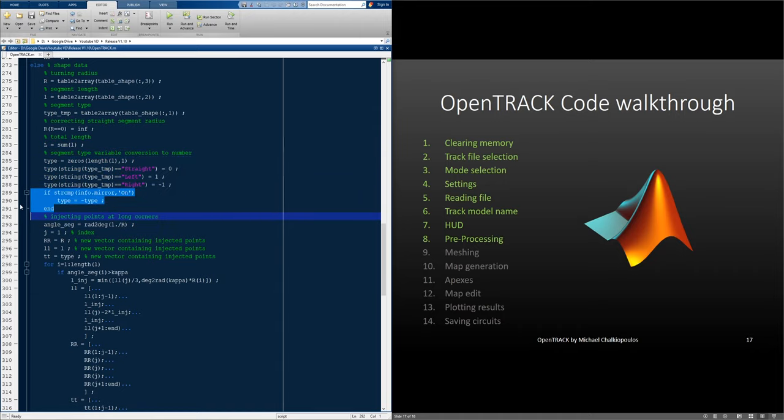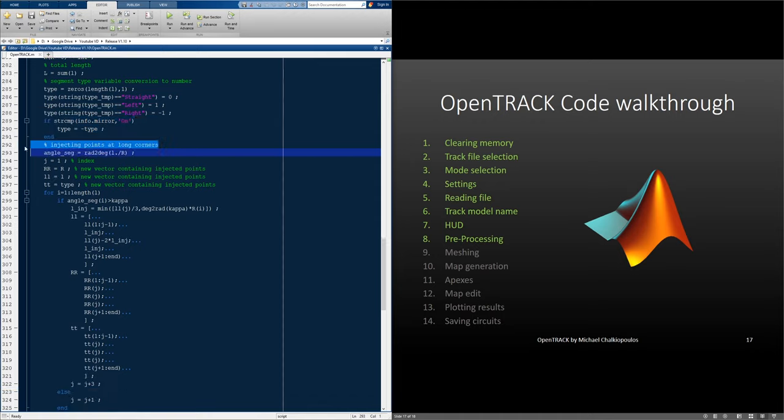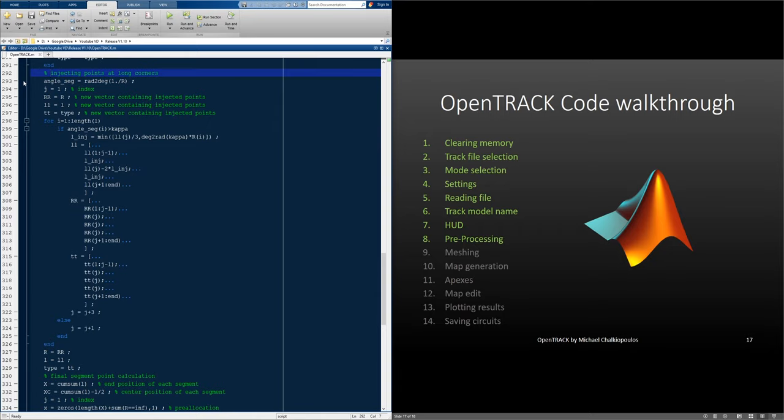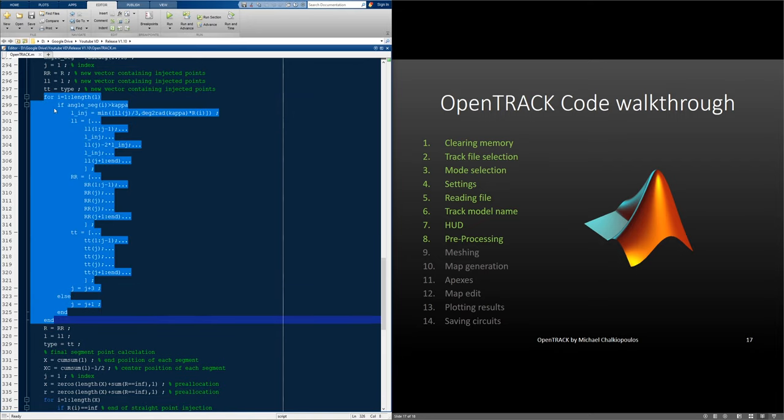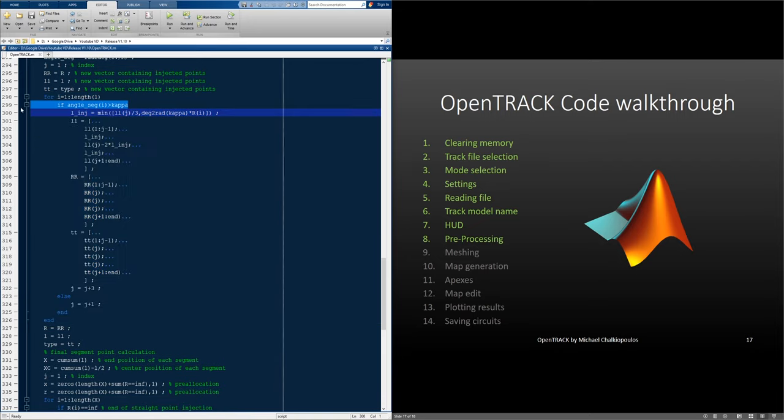Again, here we mirror the track if needed. And here is where we start injecting extra points for the long corner correction. We start by calculating the segment angle, and then we create a new j-index and three new vectors. Now, we loop through all the segments, and for every one of them, we check if its angle is larger than the kappa angle.